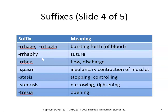Raffi — herniorrhaphy is suture repair of a hernia. Rhea — pyorrhea would be discharge of pus; diarrhea as well. Spasm — cardiospasm would be involuntary contraction of the cardiac sphincter. Stasis — hemostasis is stoppage of blood flow. Stenosis — pyloric stenosis is narrowing of the pyloric sphincter, or lumbar stenosis is narrowing of the lumbar canal. Trezia means opening, so atresia means not open.